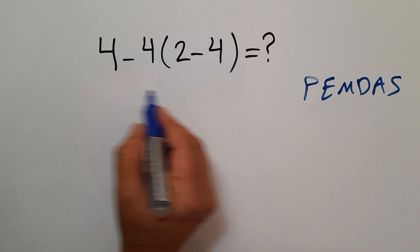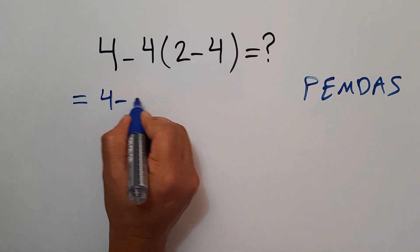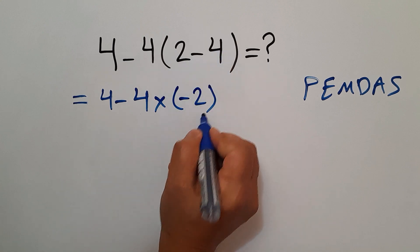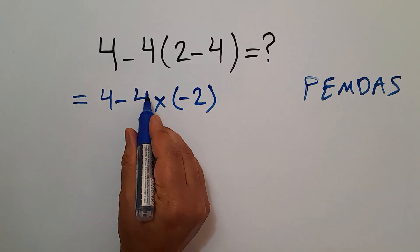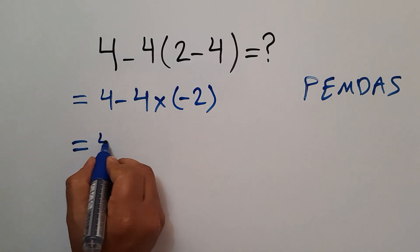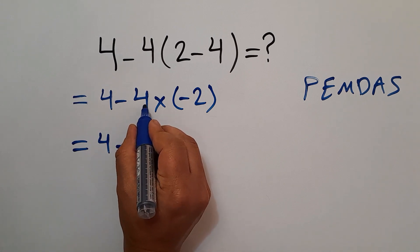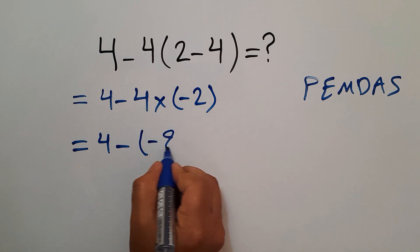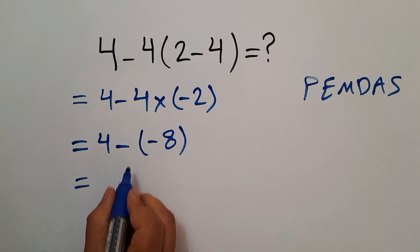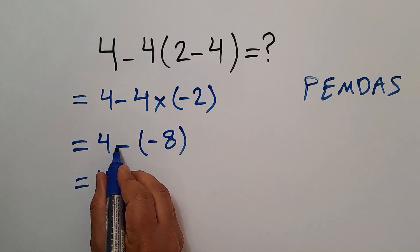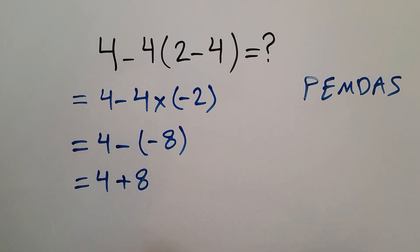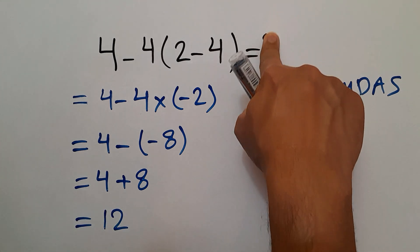Here, we first do these parentheses. 4 minus 4, then times 2 minus 4 gives us negative 2. Now we first do this multiplication. So, 4 minus 4 times negative 2. 4 times negative 2 gives us negative 8. And this is equal to 4 minus negative 8, which gives us plus 8. And 4 plus 8 equals 12. So, our final answer to this problem is 12.